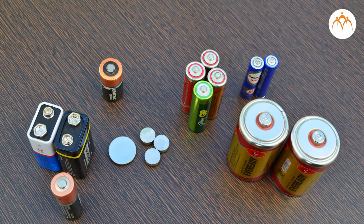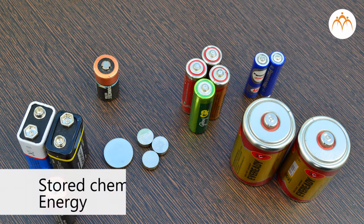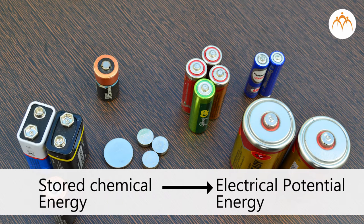How does the cell get this energy in the first place? Internally, the cell is constructed with chemicals and related materials. An electric cell is internally converting stored chemical energy into electrical potential energy.